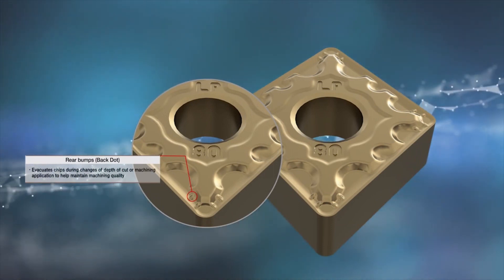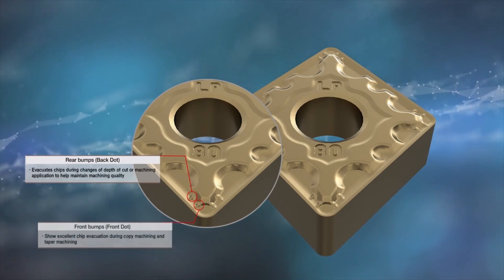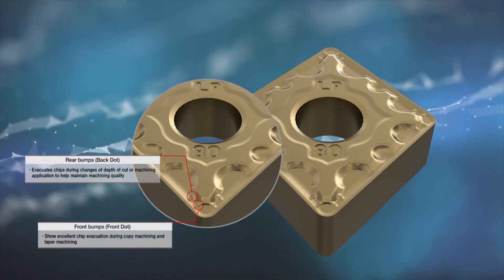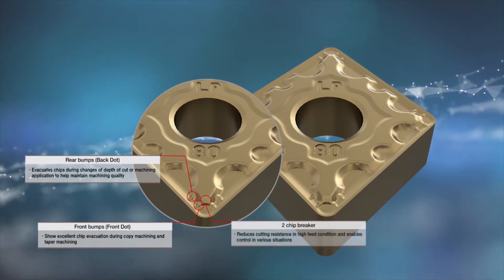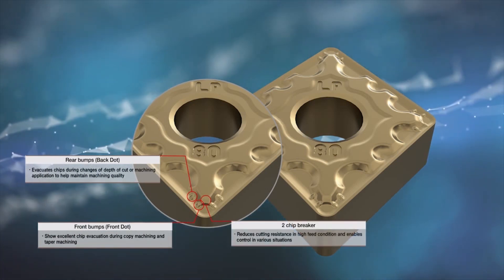The four protrusions provide excellent chip control during copying and taper machining. The dual chip breaker design reduces cutting resistance in high-feed environment and enables control in a variety of areas.